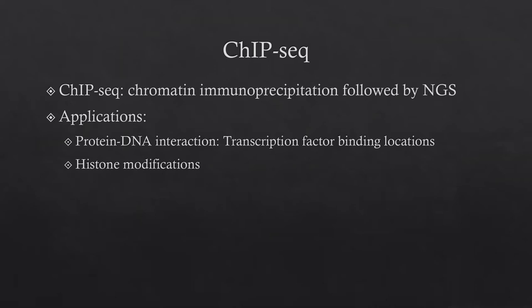ChIP-seq is chromatin immunoprecipitation followed by next-generation sequencing. There are two major applications of ChIP-seq. The first one, people use ChIP-seq to identify protein-DNA interactions — in other words, to identify transcription factor binding locations. The second application is to detect histone modification signals across the whole genome.